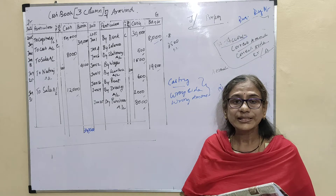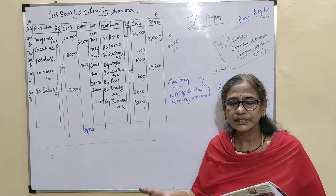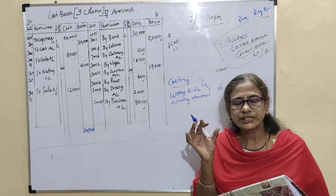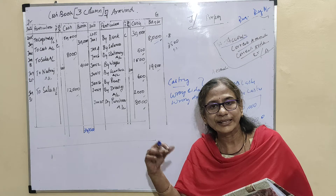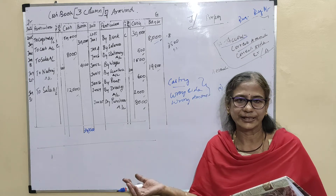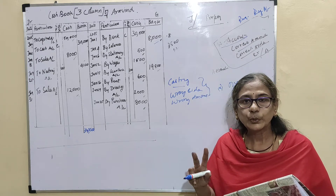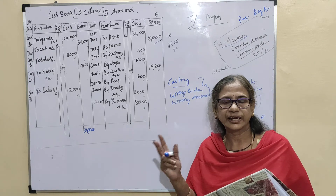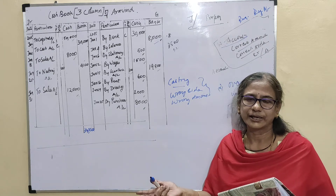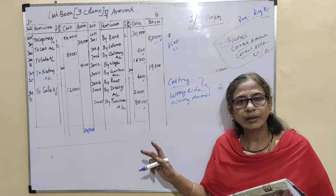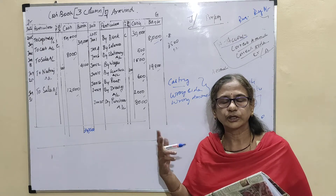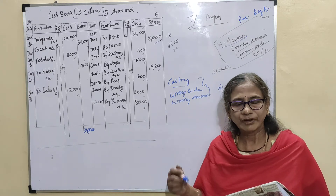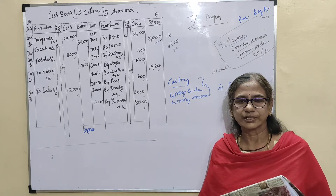Sometimes, compensating errors means one error on the debit side will be compensated by another error on the credit side. When two errors are committed — one on the debit side and another on the credit side — they will be compensated. That also will not be identified from the trial balance.